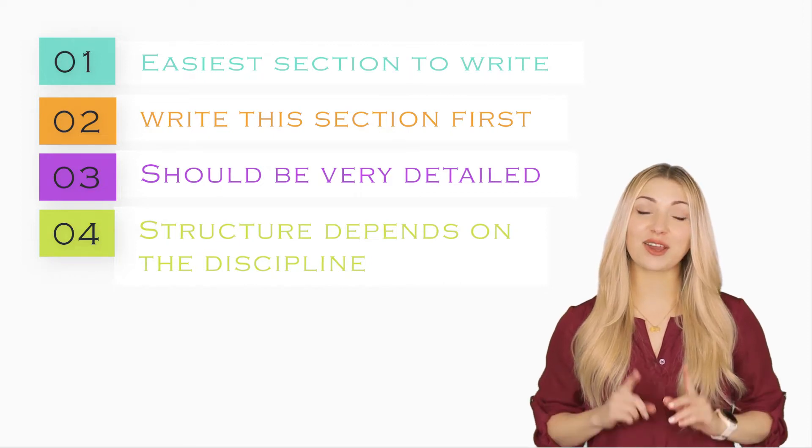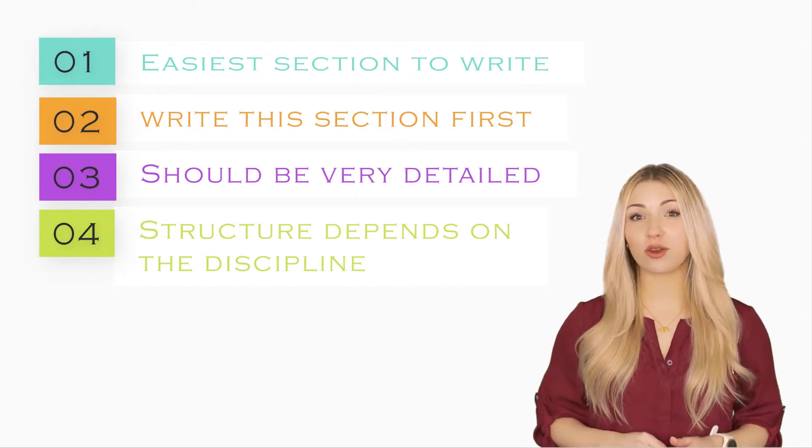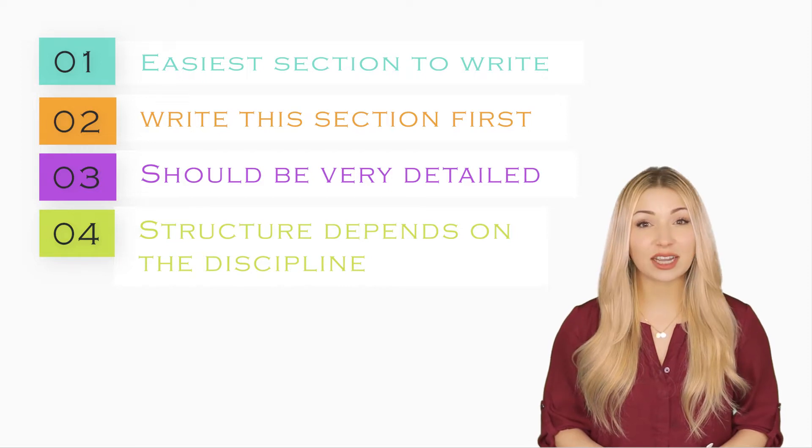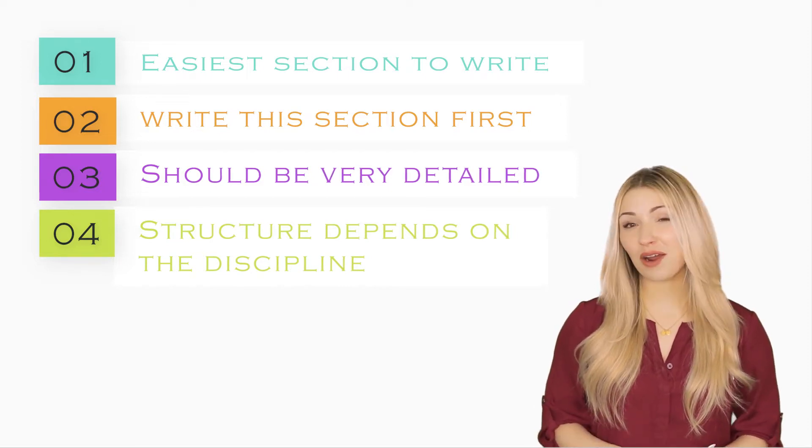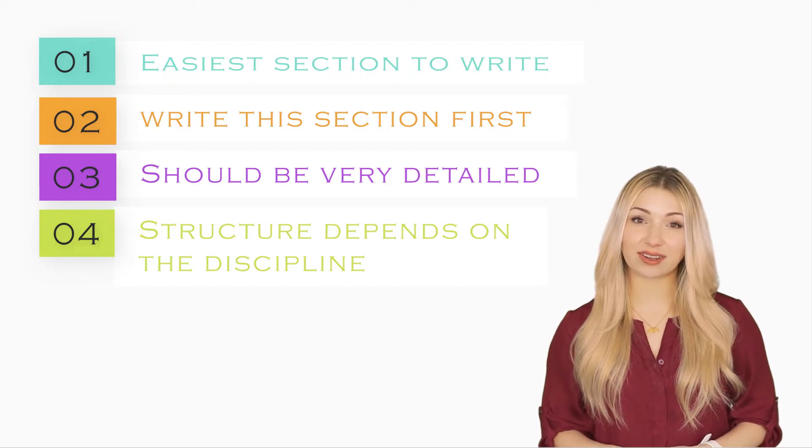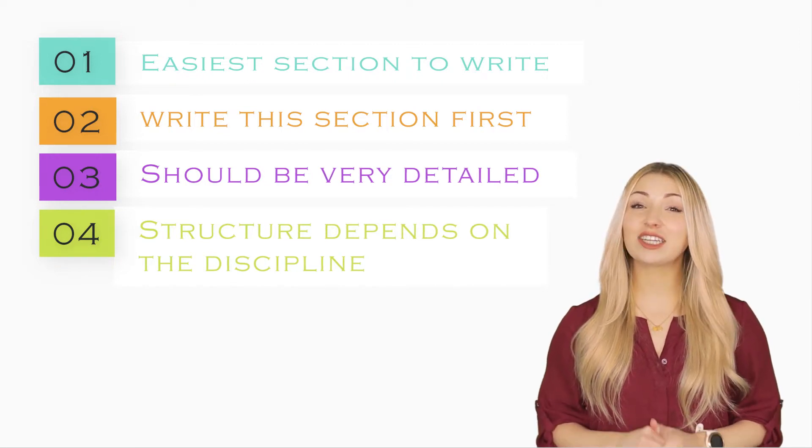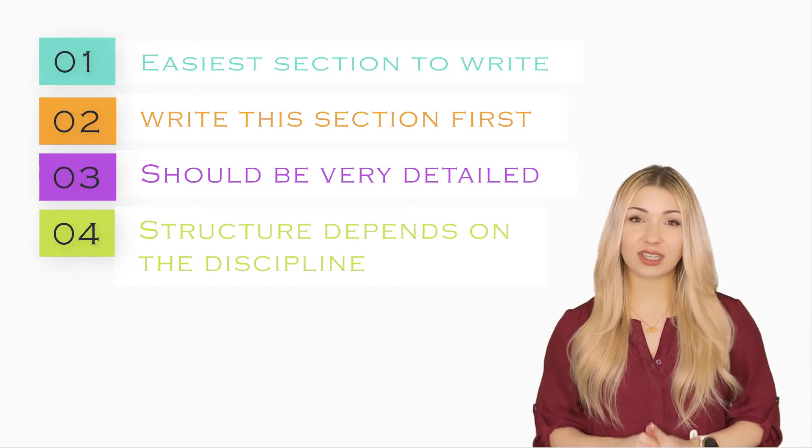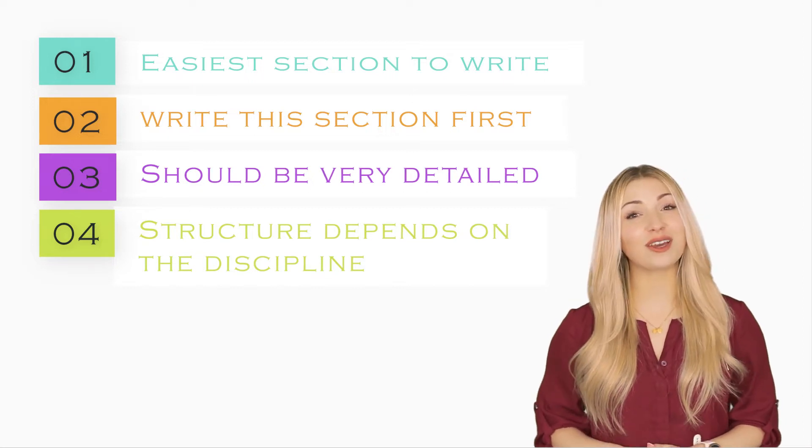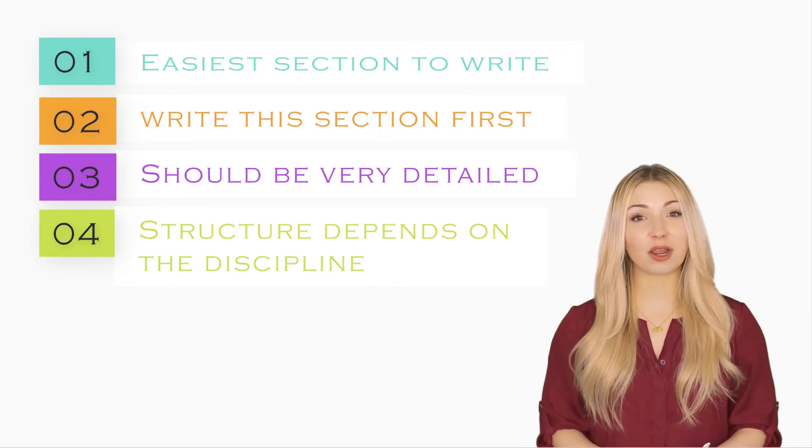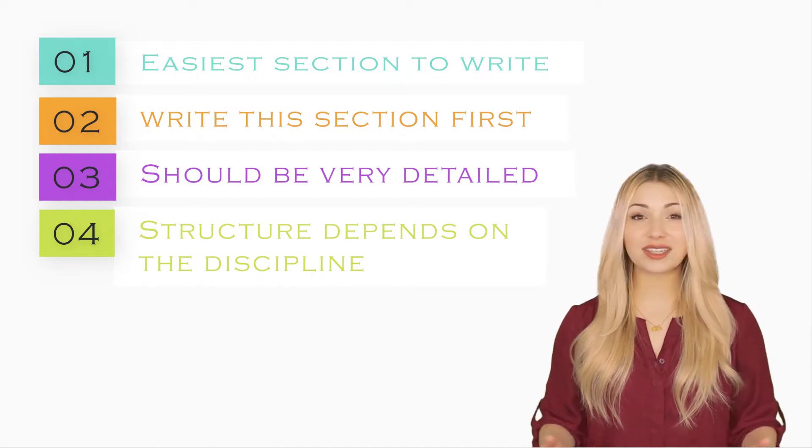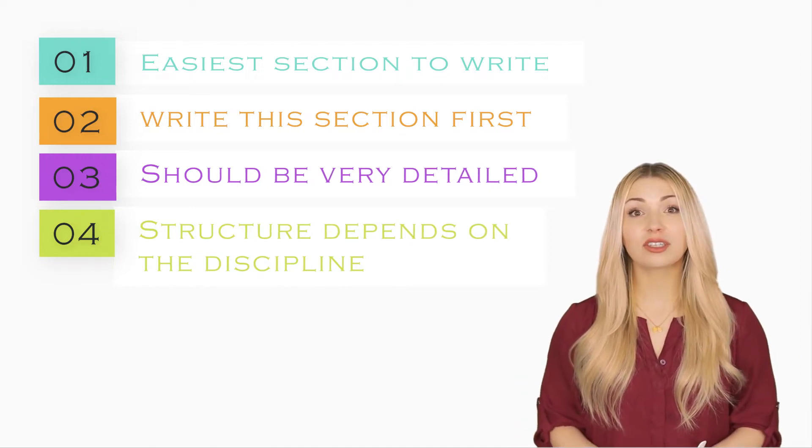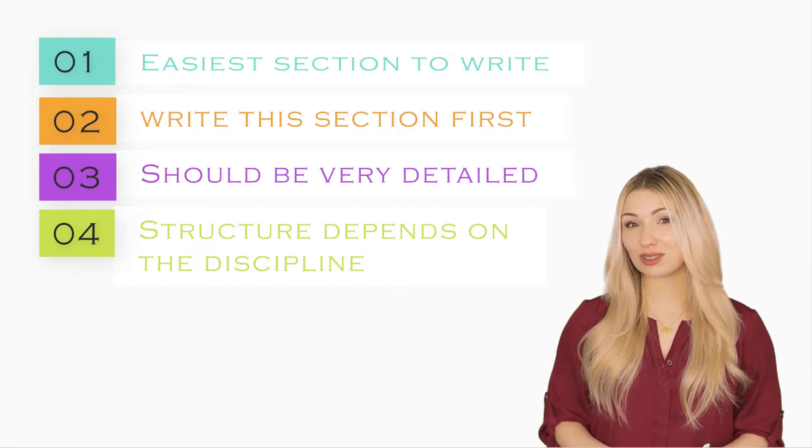It is always a good idea to start writing your research paper with the Materials and Methods section. One of the most important things to bear in mind while writing the Materials and Methods section is that it should have enough detail so that other researchers in your field can replicate your experiments and reproduce your results. You should provide all the steps in a logical order so that your readers can follow your description easily.